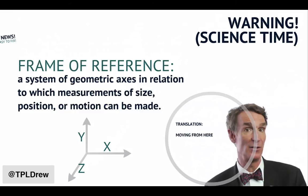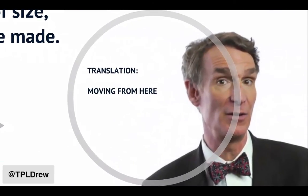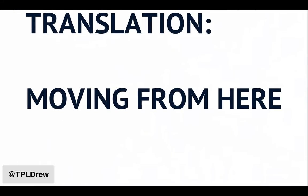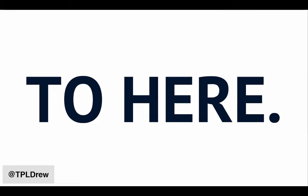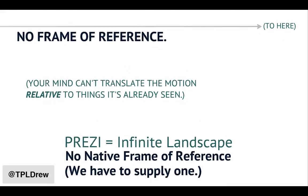So let's translate this out of science into the real world. Here's the problem: if I'm going to actually move from here to here, there's no frame of reference — you don't know where 'here' is in the context of the whole stage. And the more you do this, the more dizzy people get, the more they feel like you're just zooming to zoom without a need to zoom. If you move from here to here, you're doing the exact same thing. There's no frame of reference, and your mind actually can't translate the motion relative to the things it's already seen.